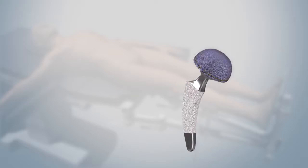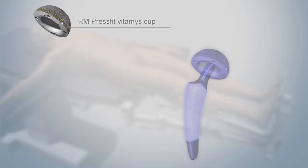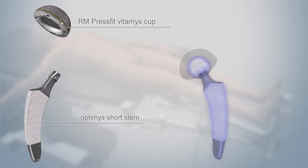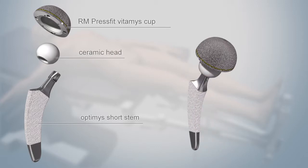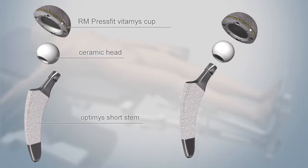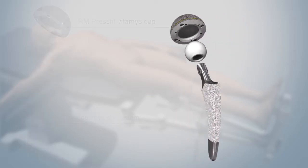The implantation of the bone preservation system comprises the RM-Presfit Vitamis cup as well as the Optimis short stem in combination with a ceramic head, with the goal of restoring the individual biomechanics of the hip joint while preserving a maximum of bone substance.